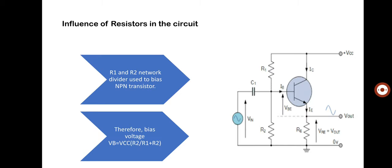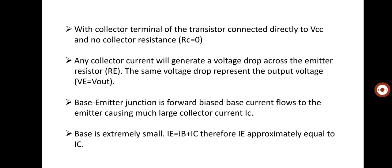Comparing the IC and IE terminals — the collector and emitter terminals — the base current is very minute or very small compared to the other terminals. Therefore, the presence of IB is not considered, and IE is approximately equal to IC.